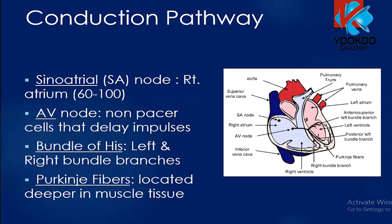Coming to the conduction pathway, conduction starts from the sinoatrial node, then passes through the right atrium. The AV node consists of non-pacemaker cells that delay impulses, then it goes to the bundle of His, which has left and right bundle branches, and finally Purkinje fibers that are located deeper in the muscle tissue.